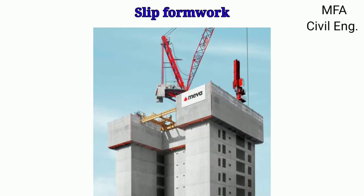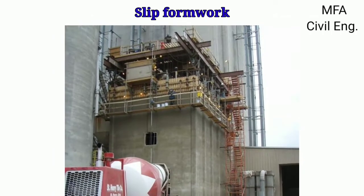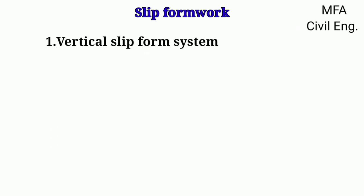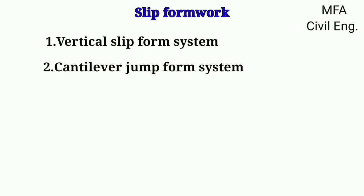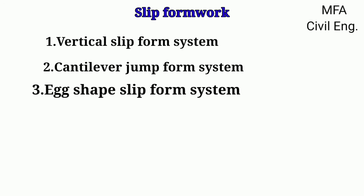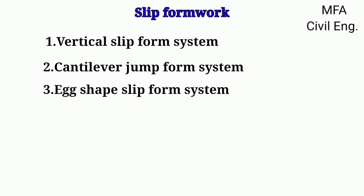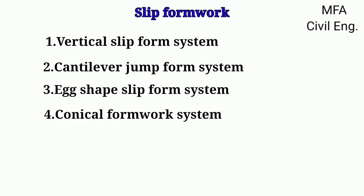Nowadays it is the most common method for construction of buildings in Australia. Slip formwork systems are of four types: vertical slip form system, cantilever jump form system, egg-shaped slip form system, and conical formwork system.